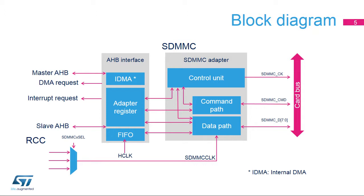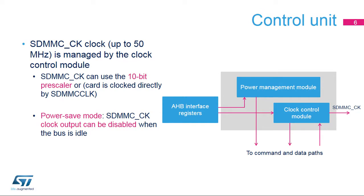The SDMMC controller consists of an SDMMC adapter and an APB interface. The SDMMC adapter provides functions such as clock generation, command, and data transfer, while the APB interface manages the control and status registers, FIFO buffers, as well as DMA and interrupt requests. Two clocks are available: the APB clock (PCLK) for the APB interface, and the SDMMC clock (SDMMC-CLK) for the SDMMC adapter. The SDMMC adapter includes a control unit containing a power management module and a clock control module with the clock divider for the card clock, SDMMC-CK.